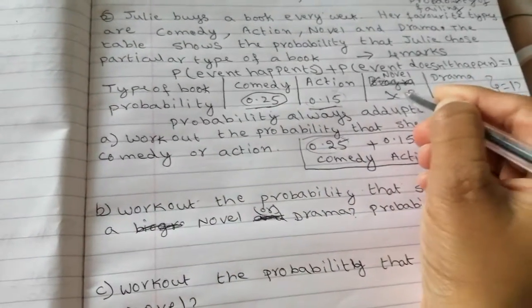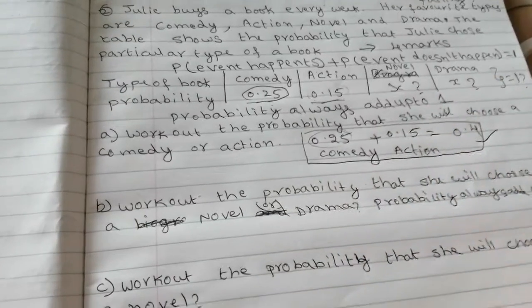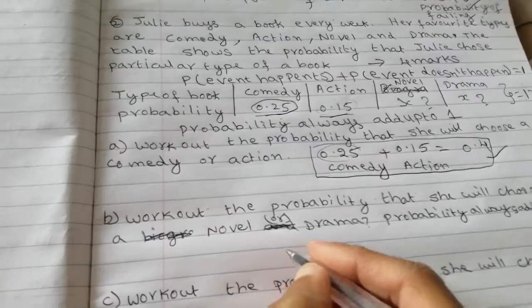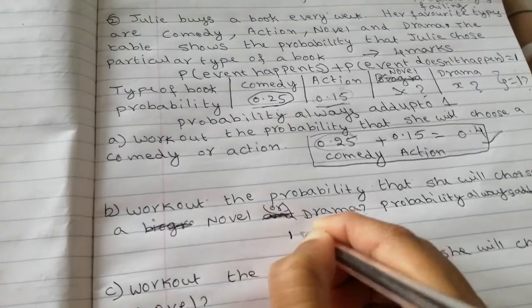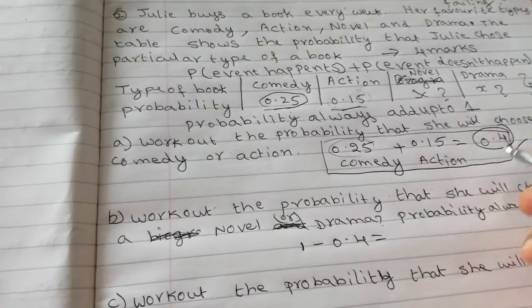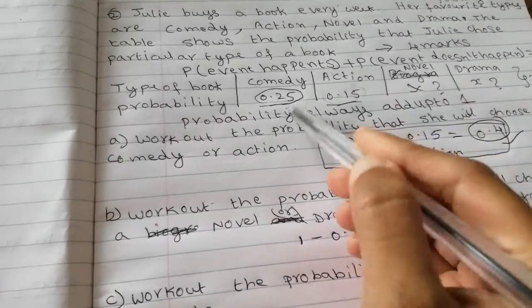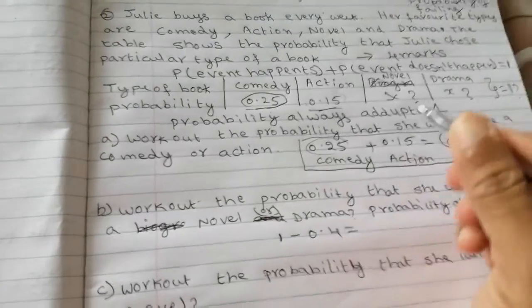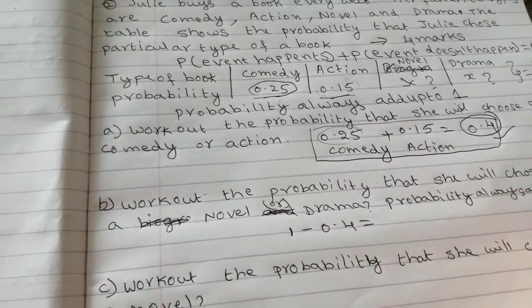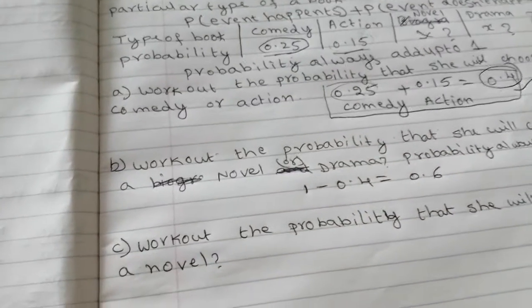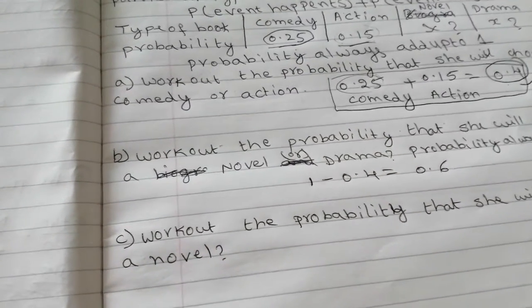So we don't know novel and drama but we know these table values are equal to 1. So what I do is 1 minus 0.4 because we know that comedy and action values are 0.4. So to get novel or drama, 0.6 chances that Julie chose novel or drama.